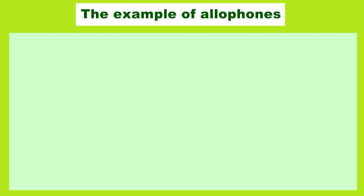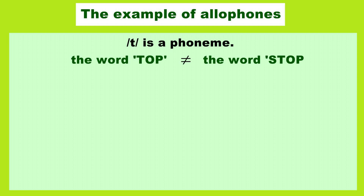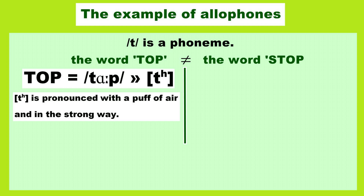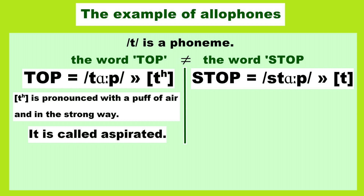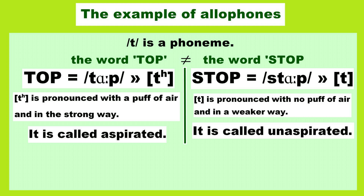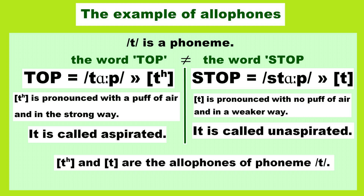Here is an example of allophones. /t/ is a phoneme, but in the word 'top,' the way we pronounce /t/ is different from the /t/ in the word 'stop.' In the word 'top,' we pronounce /t/ with a puff of air, which is called aspirated, and in a strong way. But when we pronounce /t/ in the word 'stop,' there is no puff of air and we tend to pronounce it in a weaker way — that is called unaspirated. The aspirated [tʰ] and unaspirated [t] are allophones of the phoneme /t/.